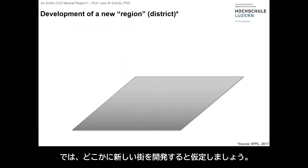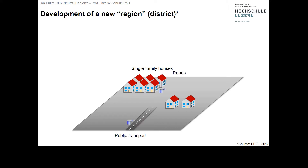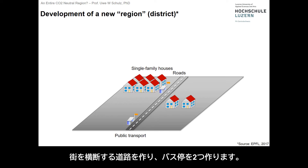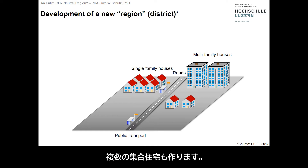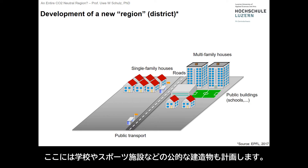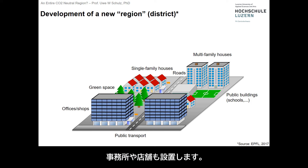Let's assume we have a certain surface where we develop a new region. We start the analysis by placing single family houses in a couple of areas of this district. We are building a road across the area and allow for a couple of bus stops. We assume a number of apartment buildings. In this area, we also plan for public buildings like schools and sporting areas. For recreational purposes, we cater for green space, and we allow for offices and shops.